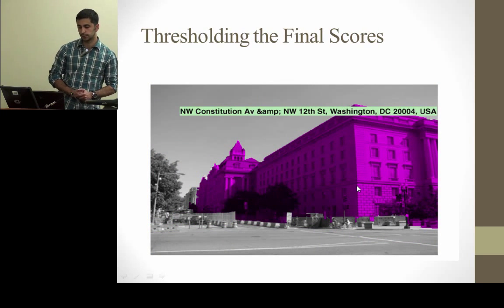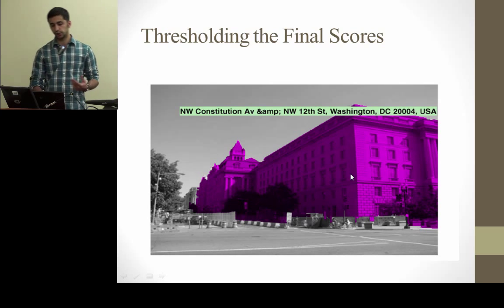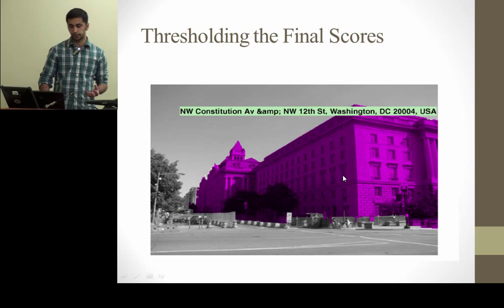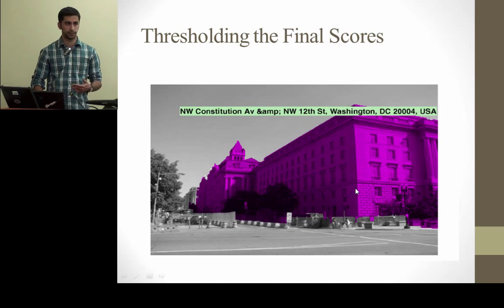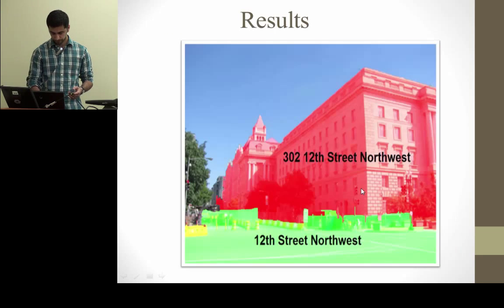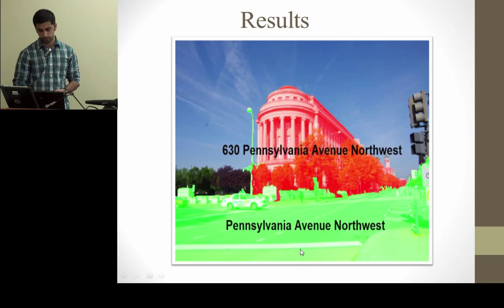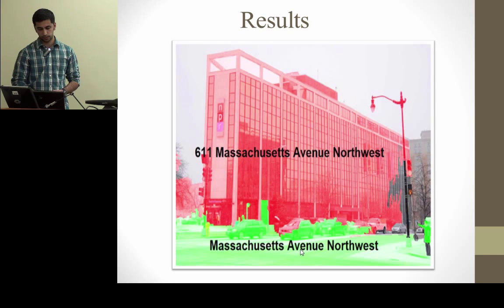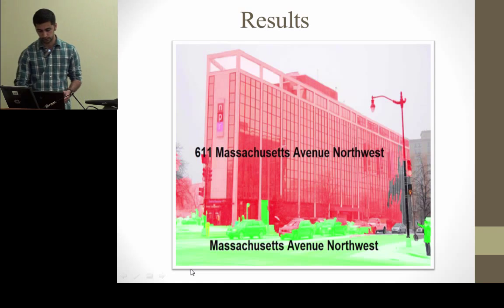After thresholding on the final scores, we obtain a geosemantic segment. Knowing which GIS projection this segmentation corresponds to, we can associate the address of that GIS building to the geosemantic segment. Here are some results showing buildings and streets. In most of the cases it is working pretty well in the examples shown; however, these were mostly easy examples with one large building and one street.